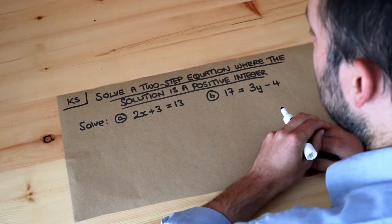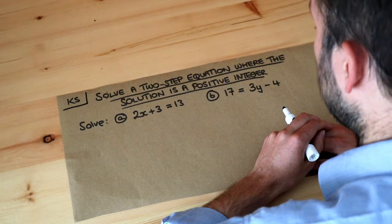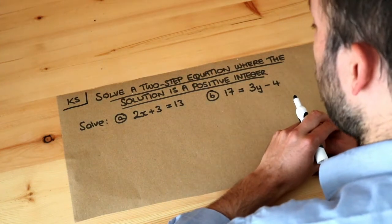Hello and welcome to this Dr. Ross Maths key skill video on solving a two-step equation where the solution is a positive integer. By integer, I just mean a whole number.